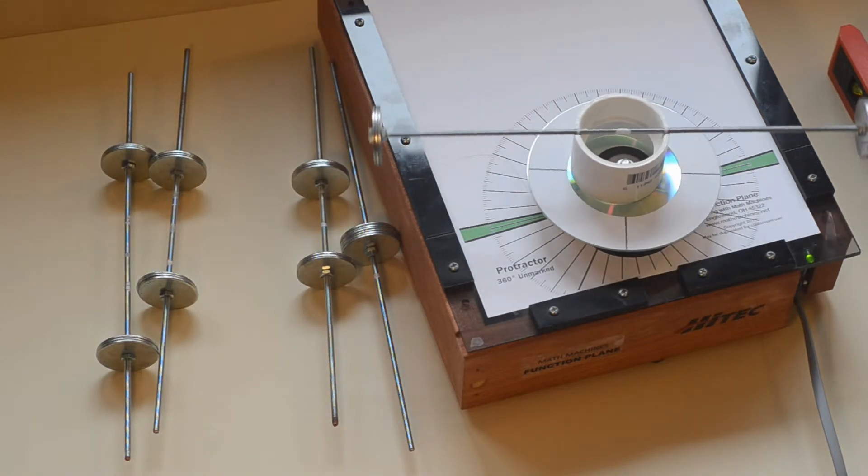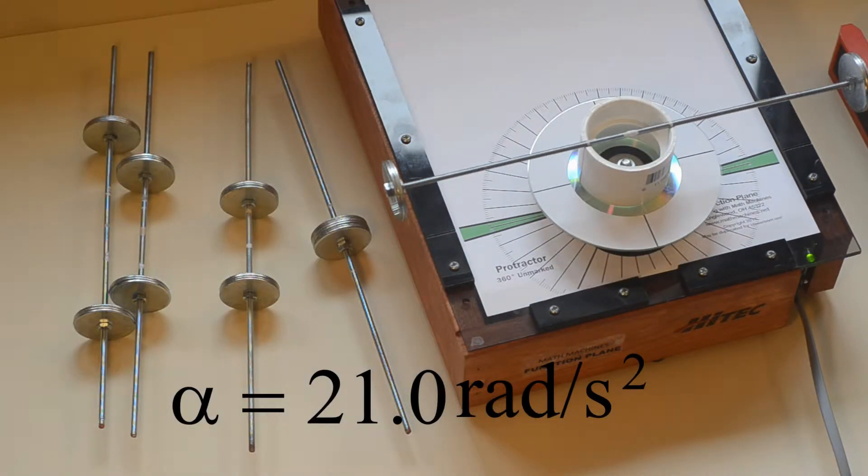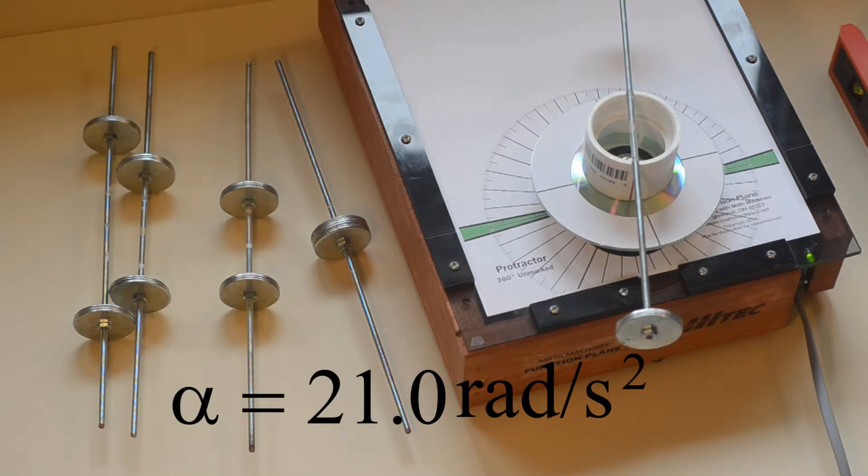The independent variable is the position of the washers and nuts. We want to find an algebraic function which will calculate the maximum safe angular acceleration, alpha, for any position of the washers and nuts.